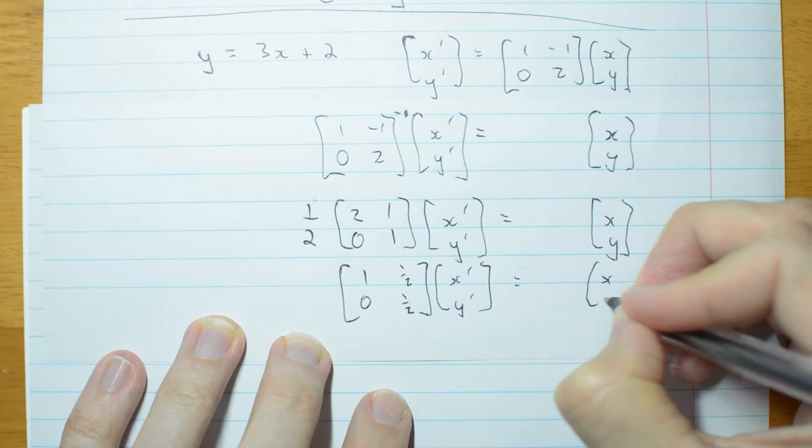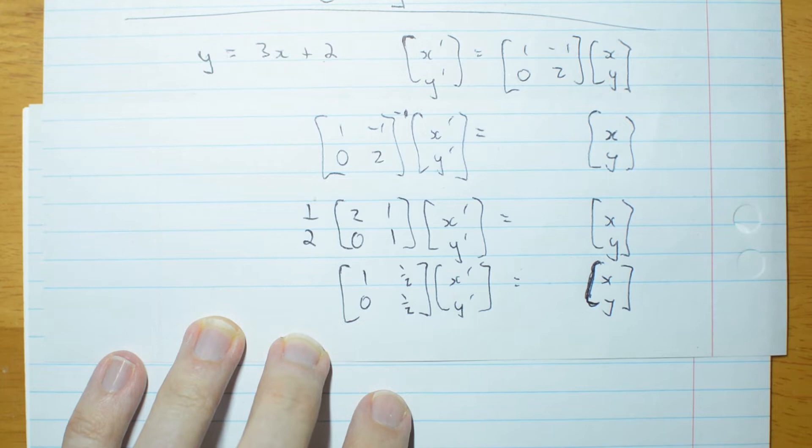x dashed, y dashed, equals x, y. Wow, that was a messy square bracket. Sometimes they get messy. I just put that half inside the matrix.